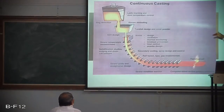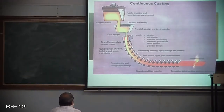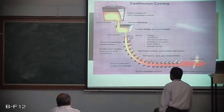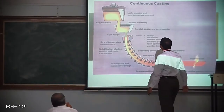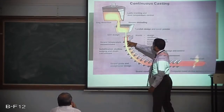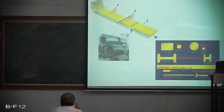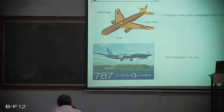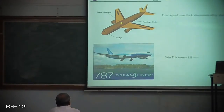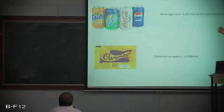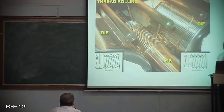This is a continuous casting and rolling operation. You can see ladle tracking and steel temperature control. The cast component is continuously fed between the rollers and you get the final rolled product. Some applications include the fuselage of aircraft using 1 mm thick aluminum alloy sheet with skin thickness varying up to 1.8 mm, beverage cans, and chocolate wrappers.